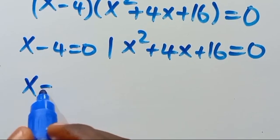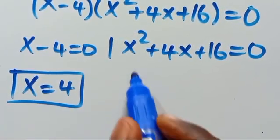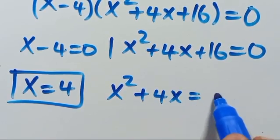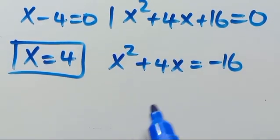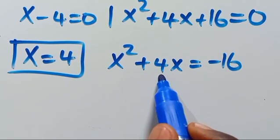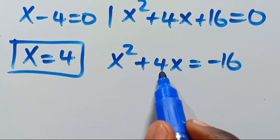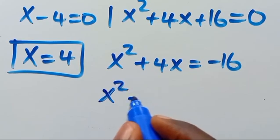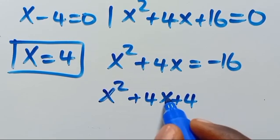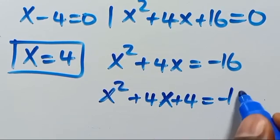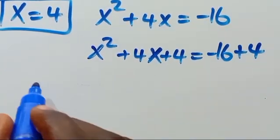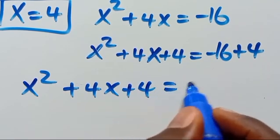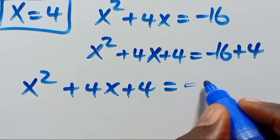From here we have x equals 4 as a solution. For x squared plus 4x plus 16 equals 0, we rearrange: x squared plus 4x equals negative 16. Taking half the coefficient of x, which is 2, squaring to get 4, and adding to both sides: x squared plus 4x plus 4 equals negative 16 plus 4, giving us negative 12.